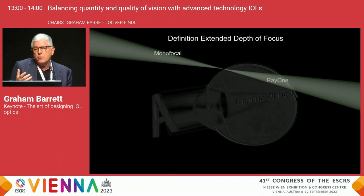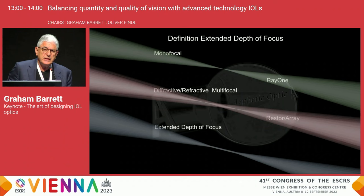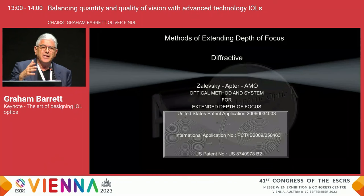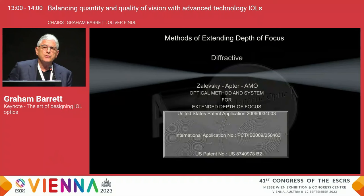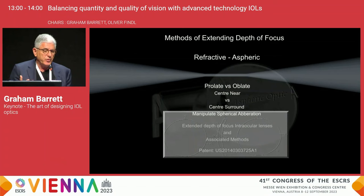By definition, extended depth of focus is quite simple. Rather than splitting the light, we take the single point of focus and extend it to provide a greater range of vision, including intermediate and near vision. There are many ways to do this: you can use diffraction, such as the J&J low-add diffractive bifocal or the low-add trifocal, or phase shift technology such as in the Vivity lens. But you don't have to resort to diffractive optics.